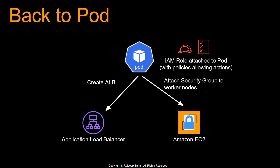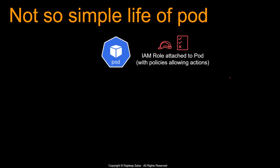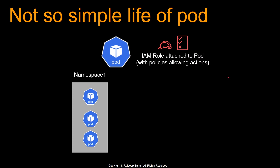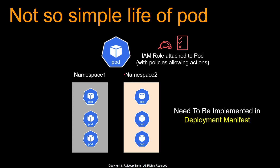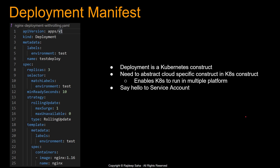Similarly, if we go back to the pod, theoretically if we can attach an IAM role with appropriate policies to the pod, this pod will have the necessary access. But pod life is not so simple, because there will be pods for one application in namespace one, another application in namespace two, pods go down, pods come up, replica sets, HPA, all that stuff. So to attach an IAM role to the pod, you need to go to the place where pod life starts — it needs to be implemented in the deployment manifest. But deployment manifest is a Kubernetes construct, and you cannot just put cloud-specific concepts such as IAM role in a Kubernetes construct, because we need to abstract cloud-specific constructs in Kubernetes constructs — that's what enables Kubernetes to run on multiple platforms.